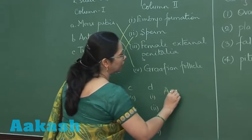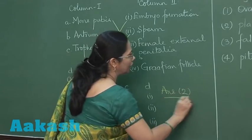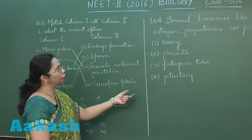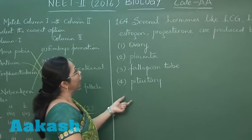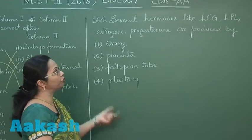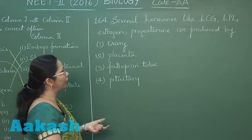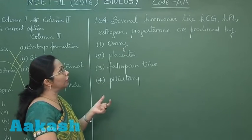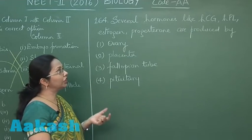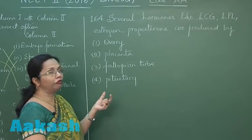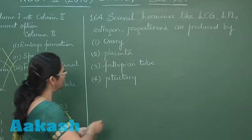Now moving on to the next one, that is 164. In this, these hormones HCG, HPL, estrogen, and progesterone, all of them are secreted by the placenta. The ovary does secrete estrogen and progesterone but not HCG and HPL, which are secreted only during pregnancy when the placenta is being formed.